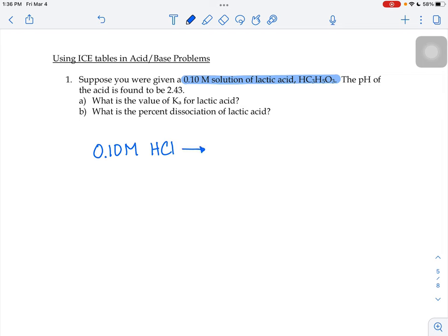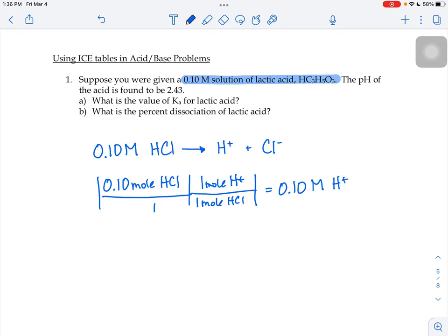hydrochloric acid 100% dissociates into hydrogen ions and chloride ions. So what that means is if you have 0.1 moles of hydrochloric acid, for every 1 mole of hydrochloric acid, you would get 1 mole of H+. And therefore, the molarity of the H+ matches the molarity of the acid. This is not the case for 0.1 molar lactic acid.